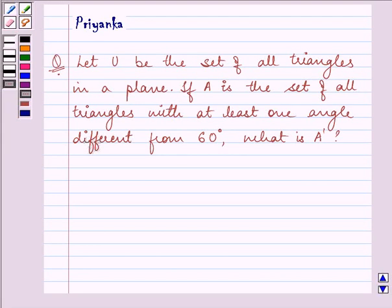Hi and how are you all today? Let us discuss the following question. It says, let U be the set of all triangles in a plane. If A is the set of all triangles with at least one angle different from 60 degrees,